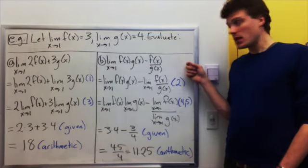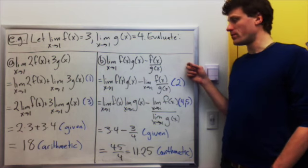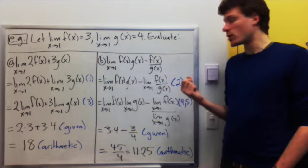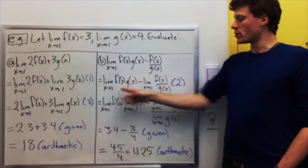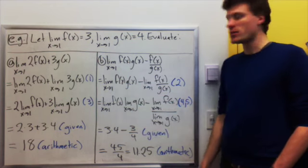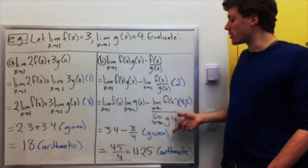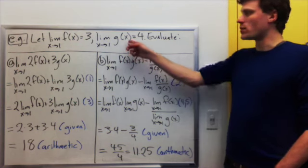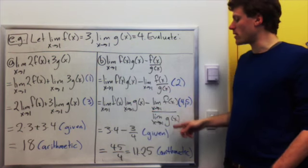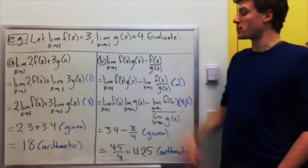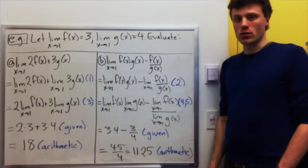Part b: let's evaluate the limit as x goes to one of f times g minus f divided by g. This is a difference of two functions, so rule two breaks it into two limits. The first is a product, so rule four breaks that into a product of limits. The second is a quotient, and rule five allows us to break that into a quotient of limits, so long as the bottom does not go to zero — but it goes to four, so we're fine. We get the limit of f times the limit of g minus the limit of f over the limit of g, which gives 3 times 4 minus 3/4 = 45/4, or 11.25.